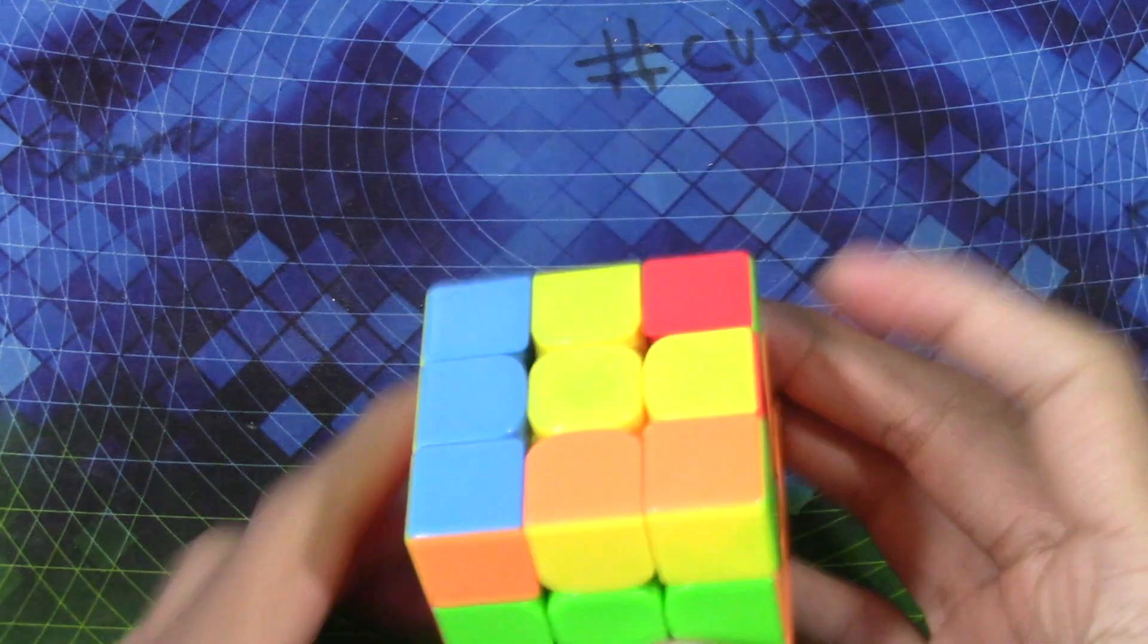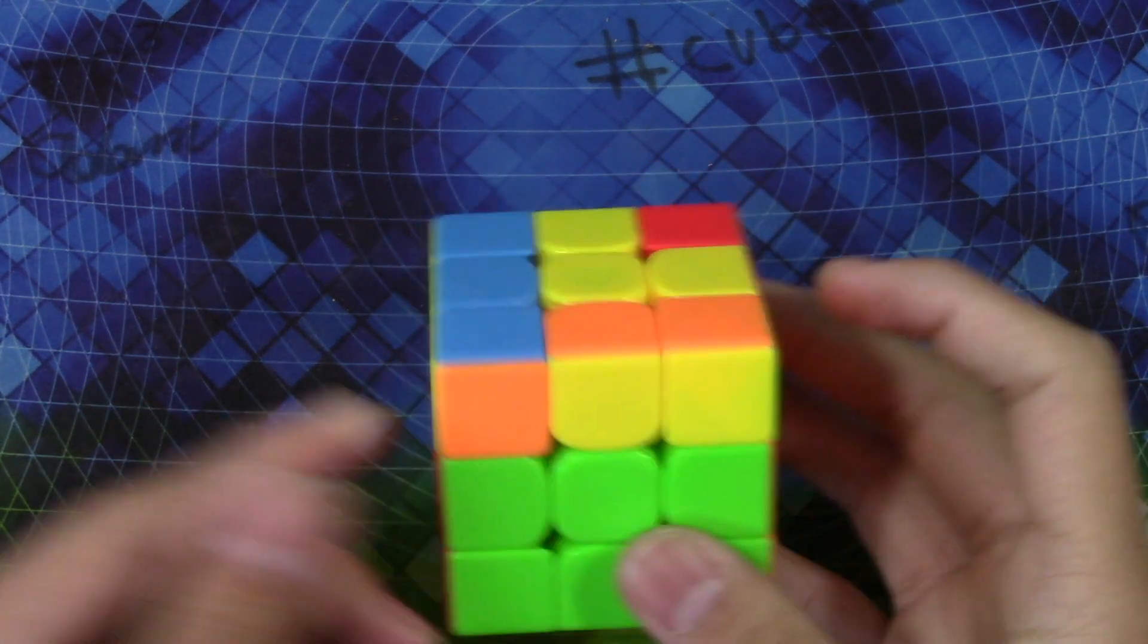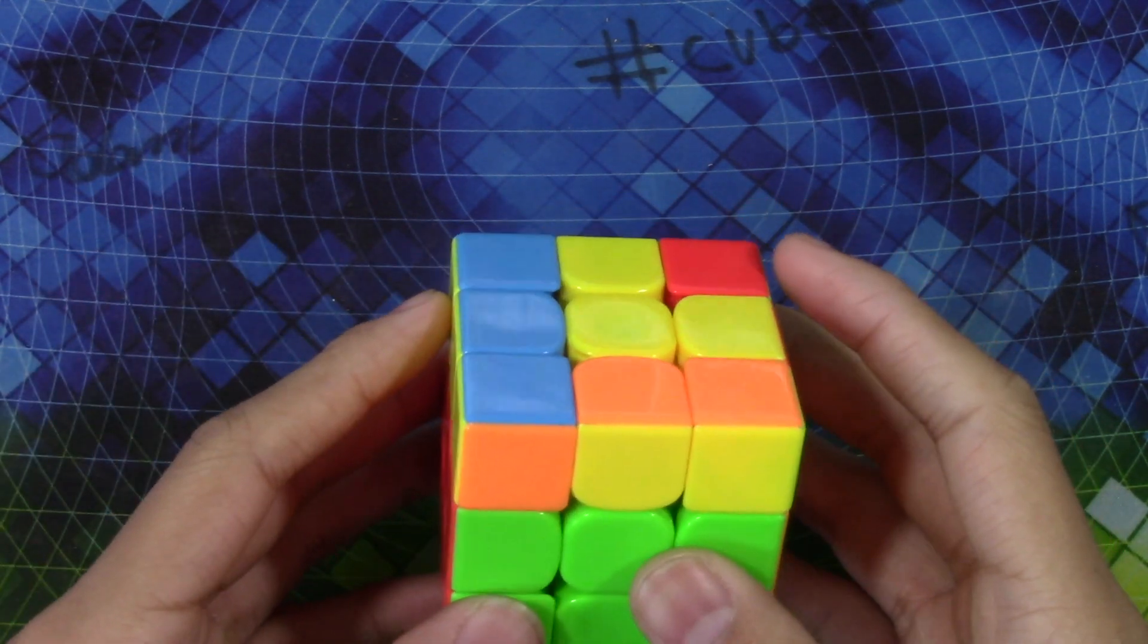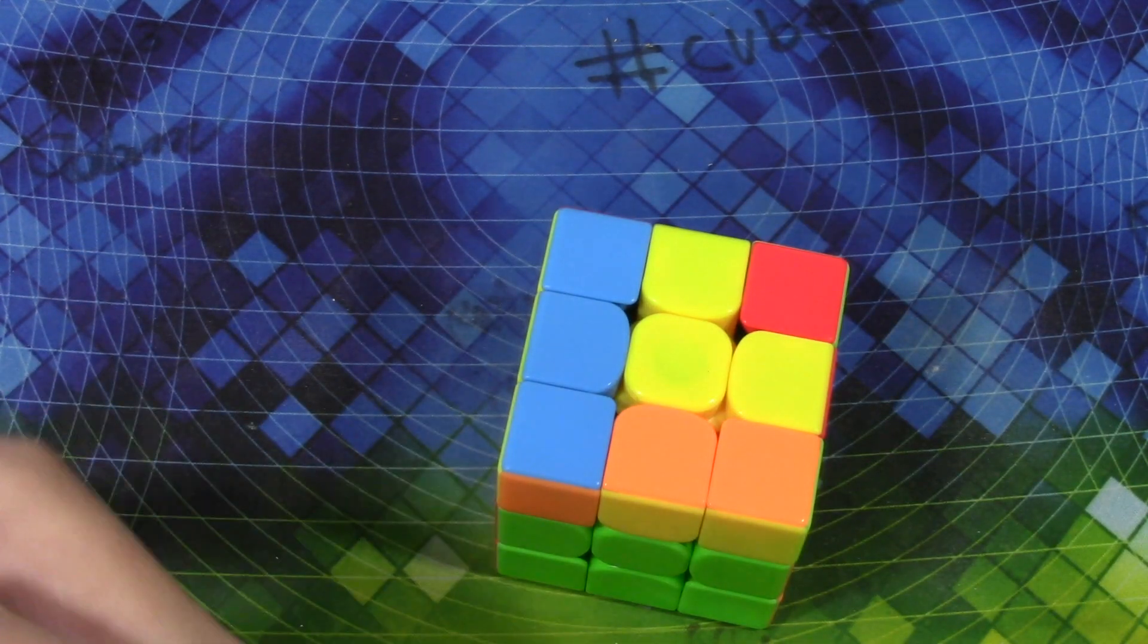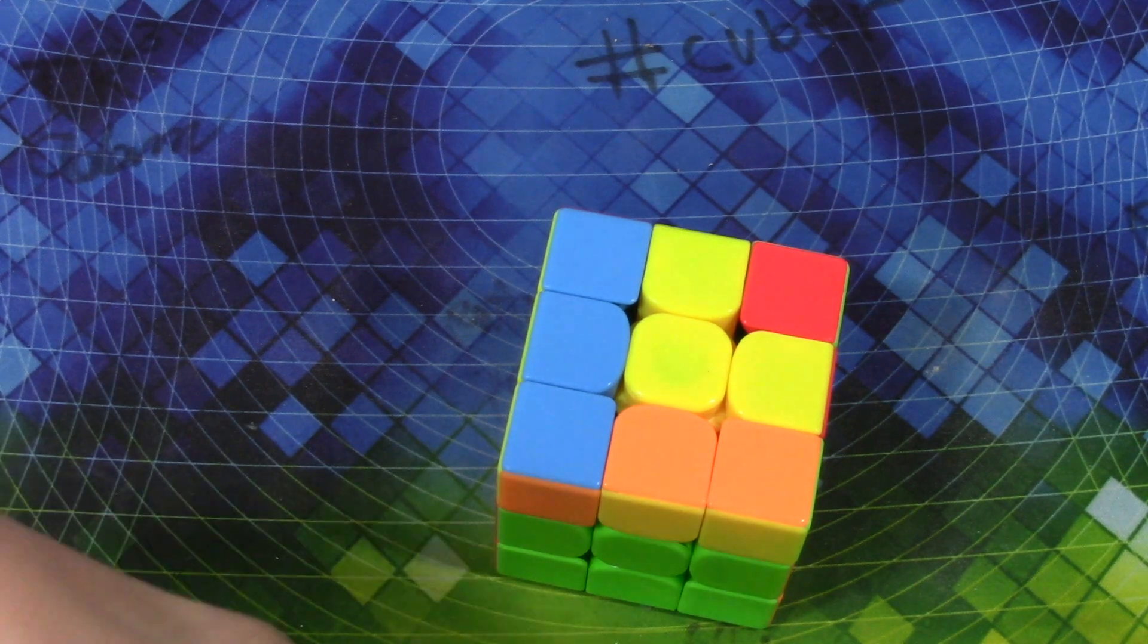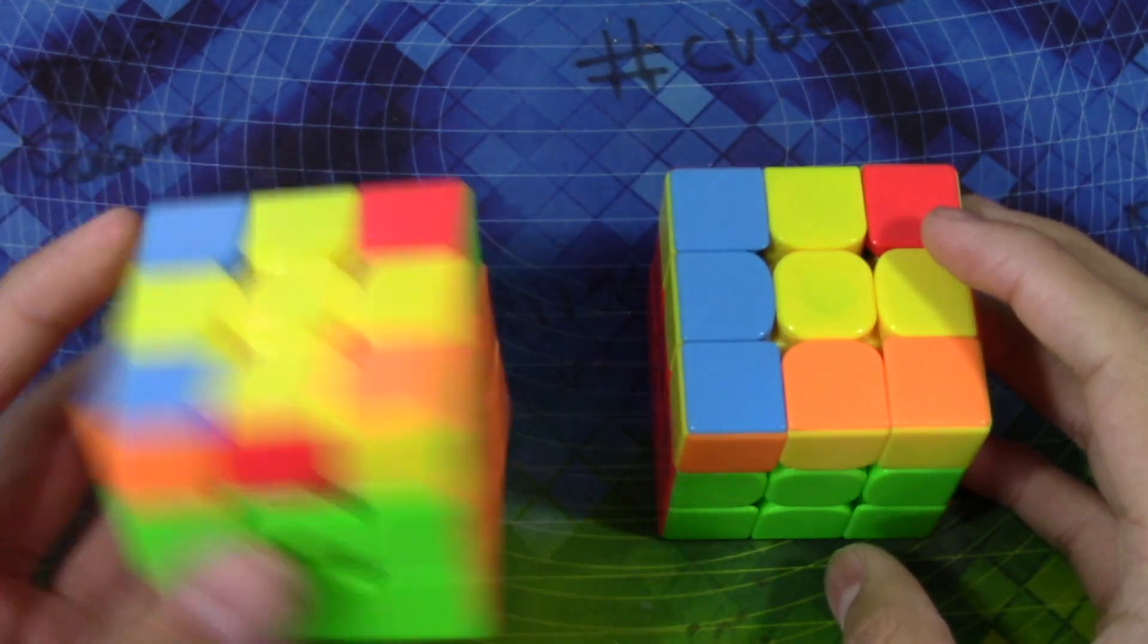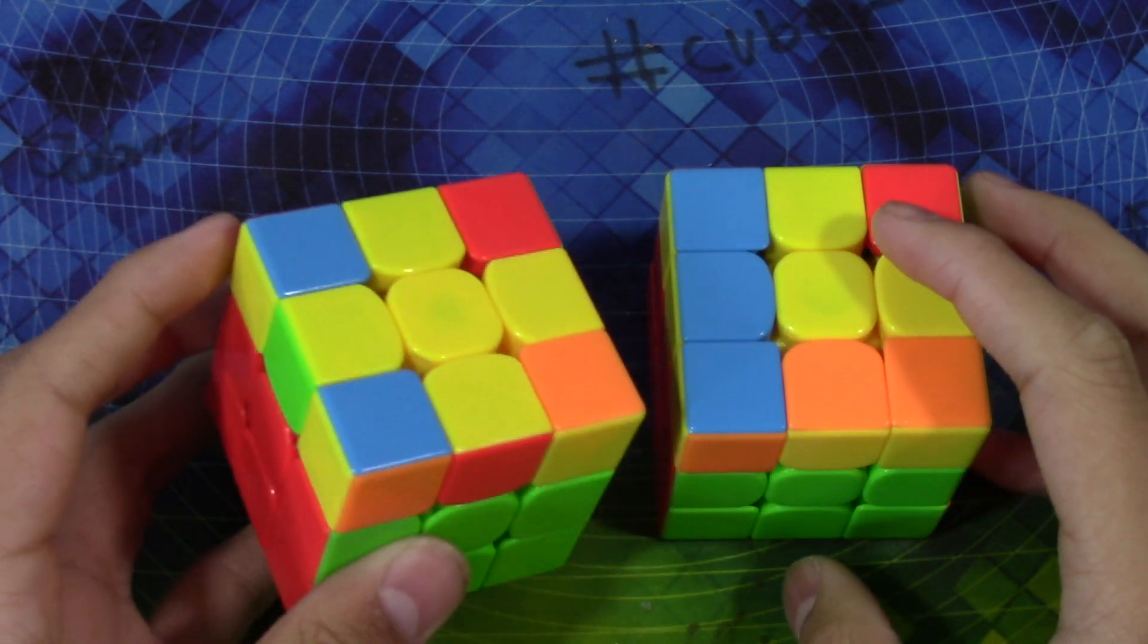Now for this last case, as you see it has the same bar as always and these two colors are matching this time. It's going to be really easy to learn this algorithm if you know the OLL CP for this case or the COL for this case.